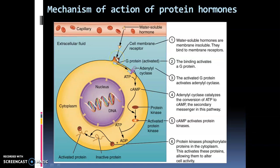The hormone binds with the membrane-bound receptors, which have a G protein on the cytoplasmic side. The binding of the hormone with this receptor activates the G protein. The activated G protein then activates a membrane-bound enzyme called adenylyl cyclase. Adenylyl cyclase is an enzyme that synthesizes cyclic AMP from ATP. ATP (adenosine triphosphate) is converted to cyclic AMP, or cyclic adenosine monophosphate, by adenylyl cyclase.